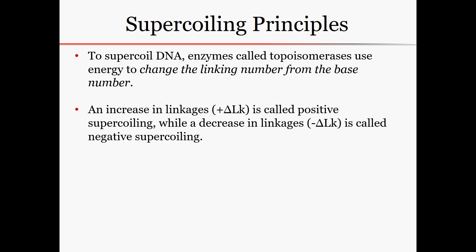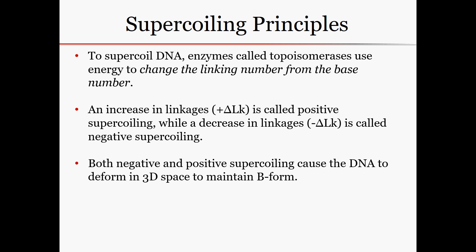An increase in the linkages of the two strands around each other is referred to as positive supercoiling, while a decrease in the number of linkages is called negative supercoiling. Both negative and positive supercoiling will cause the DNA to deform in three-dimensional space, curling up on itself. The negative and positive will have that three-dimensional writhe in two different directions, because they're compensating for the two different directions their backbones have gone. Either way, they'll take up less space and move faster through a gel.